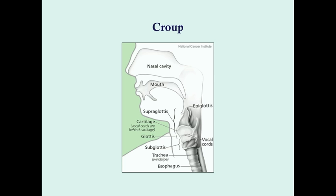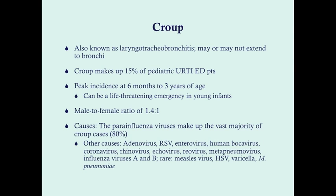Croup can affect anywhere from the larynx, through the vocal cords, down through the trachea, and possibly even into the bronchi — so it can affect this entire respiratory tract. Croup will at least affect the upper trachea and through the glottis and usually into the larynx. Croup is also known as laryngotracheobronchitis, but it may or may not extend to the bronchi, so you may hear it referred to as laryngotracheitis, laryngotracheobronchitis, or just croup.